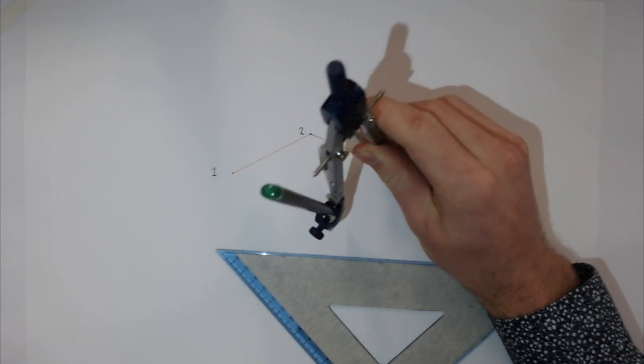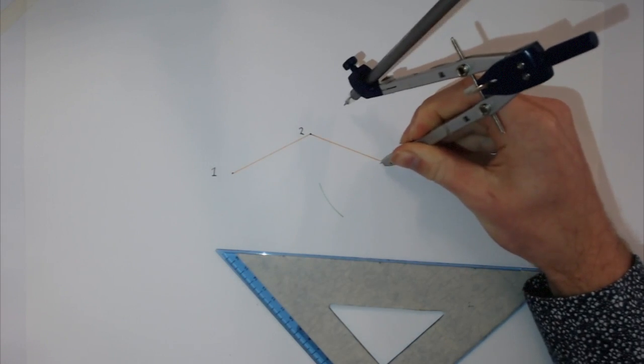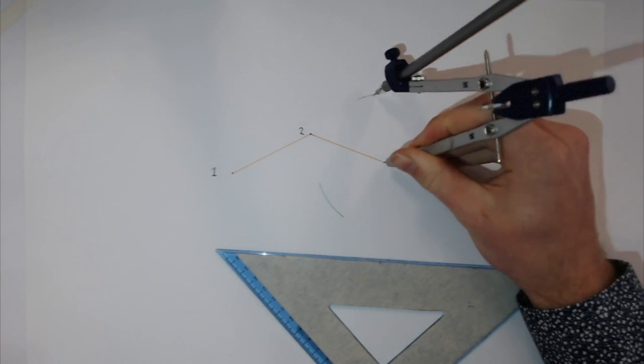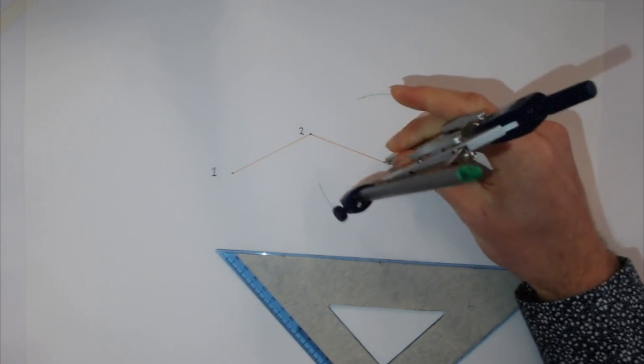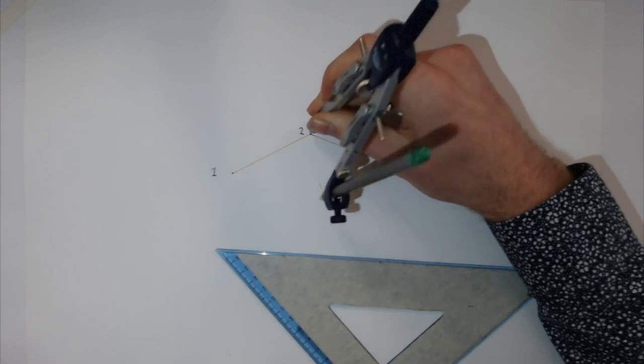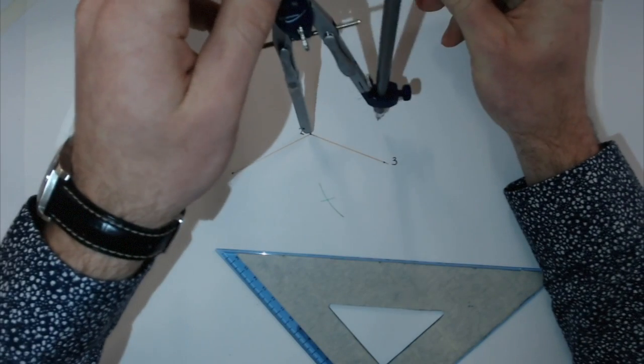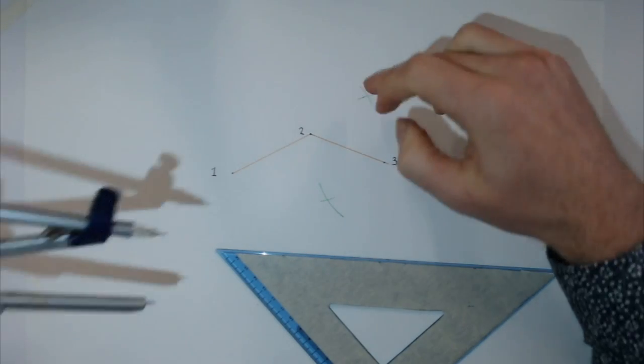Scribe an arc here and also on this side - two arcs. Then place it on point two to find the center point between two and three. Mark the intersections - we've got two points that intersect.